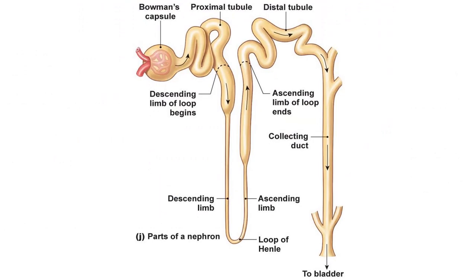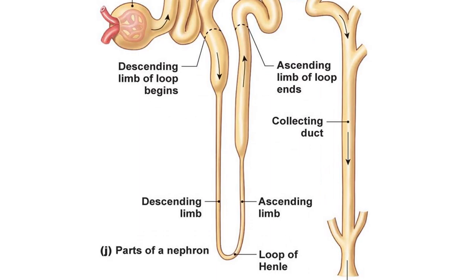After filtration in the Bowman's capsule, the filtrate enters the proximal convoluted tubule. Here, active transport of sodium, potassium, and salts into the surroundings occurs, and water follows by osmosis - the movement of water from a dilute to a less dilute solution. This begins the process of reabsorbing salts and water back into the body.